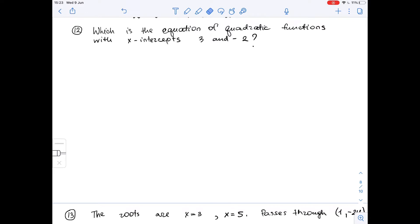If we know that x-intercepts are at 3 and negative 2, that means that f of 3 is equal to 0 and f of negative 2 is equal to 0 as well.